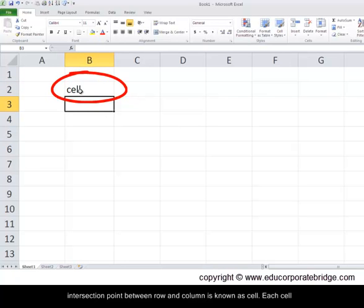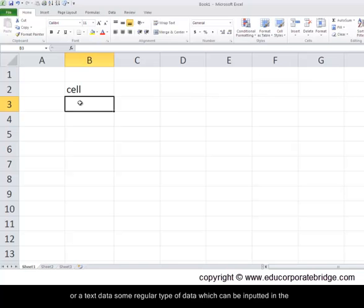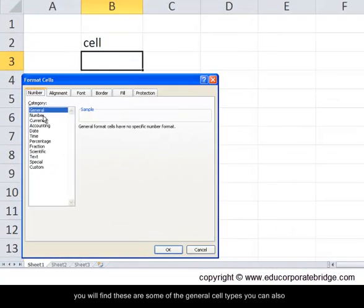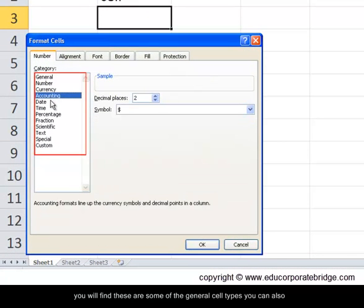Each cell can consist of different kinds of data. The data can be numerical data or text data. Some regular types of data which can be inputted in the cell can be found by right-clicking and clicking on the format cell. You will find these are some of the general cell types.